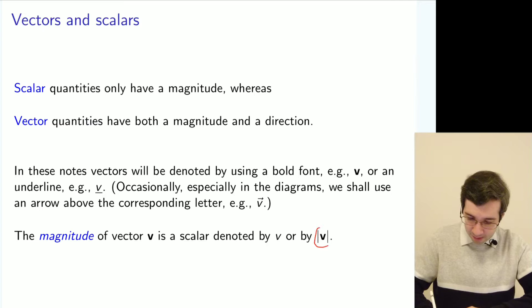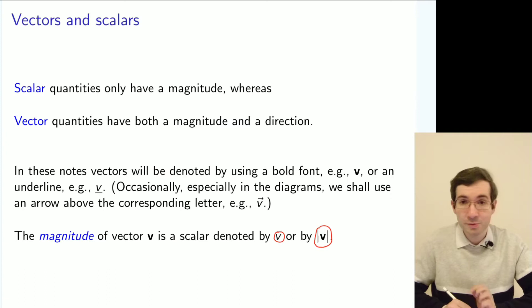About the magnitude, you take the absolute value of your vector, and this is sometimes denoted by just using the non-bold version of this symbol.